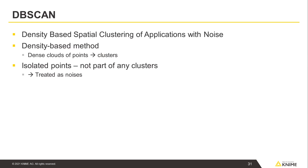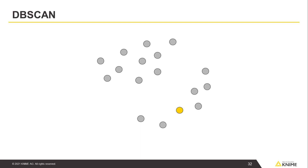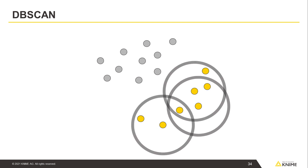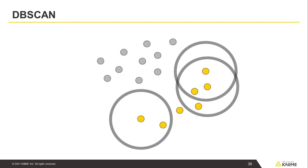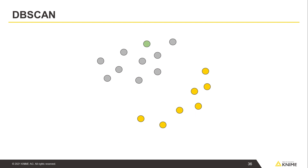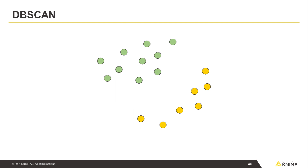DBSCAN stands for Density-Based Spatial Clustering of Applications with Noise. It is a density-based clustering method grouping dense clouds of data points into clusters. Any isolated points are not considered as part of any cluster and are treated as noise. The DBSCAN algorithm starts by randomly selecting a starting point. If there are a sufficiently large number of points within the neighborhood around that point, those points are considered part of the same cluster. The neighborhoods of the newly added points are then examined, and if there are data points within these neighborhoods, those points are also added to the cluster. This process is repeated until no more points can be added, then another point is randomly selected as a starting point for another cluster, and the process is repeated until no more data points are available to be assigned to clusters.